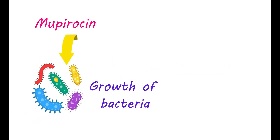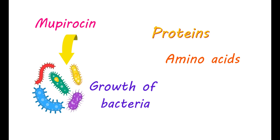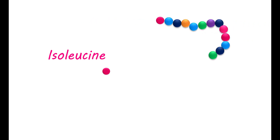How it works: Mupiracin works by reducing the growth of bacteria. For replication and growth, bacteria need many proteins. Each bacterium can prepare its proteins on its own by arranging amino acids in a specific sequence. Mupiracin targets this protein synthesis, thereby controlling bacterial growth. It inhibits the addition of one amino acid called isoleucine. Normally, isoleucine is incorporated into the growing peptide chain in bacteria by a transfer RNA. However, this needs an enzyme, and energy is also required in the form of an ADP molecule.